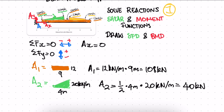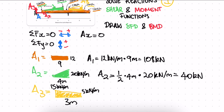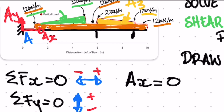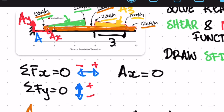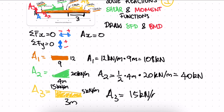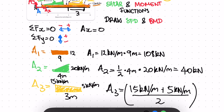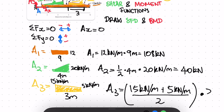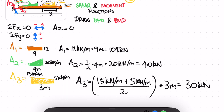Finally, A3 is the trapezoidal shape, with 15 kN/m on one side and 5 kN/m on the other side over a length of 3 m. Using the trapezoid formula: A3 = (15 + 5) / 2 × 3 = 30 kN.